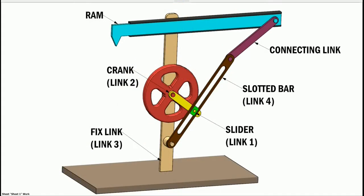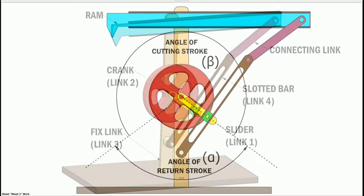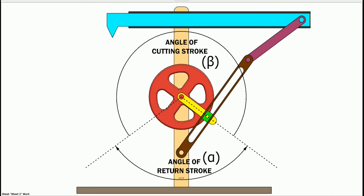These are the major parts of the crank and slotted quick return mechanism. The crank needs to rotate through an angle of beta for the forward stroke and it needs to rotate through an angle of alpha for the return stroke.